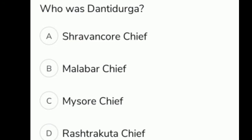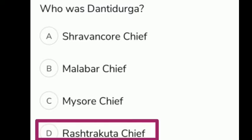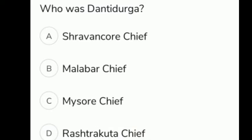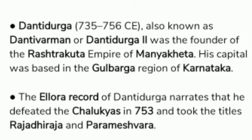Who was Dantidurga? The given options are A Shravankar chief, B Malabar chief, C Mysore chief, D Rashtrakuta chief. The correct answer is option D, Rashtrakuta. Dantidurga (735–756 CE), also known as Dantivarman or Dantidurga II, was the founder of the Rashtrakuta Empire of Manyaketa. His capital was based in the Gulbarga region of Karnataka.